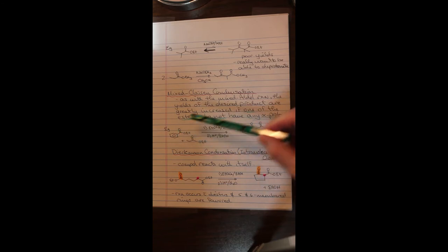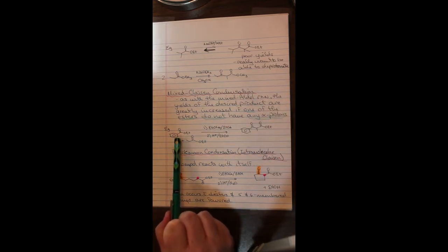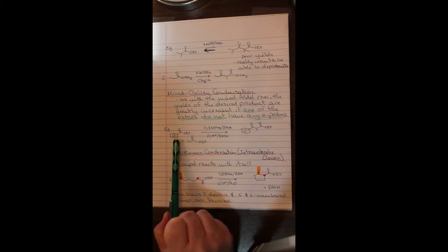So in a mixed aldol reaction, the yields of the desired product are greatly increased if one of the esters does not have any alpha protons. And this same was stated for the mixed aldol. So here in this case, you can see that we've generated this ethyl benzoate ester. This is going to be one of our species. Of course, there are no alpha protons here. And as a result, this is going to be the one where the enolate is always going to attack. We're going to treat it with sodium methoxide and ethanol. And probably for this reaction, the ethyl propanoate here is going to be added slowly to the reaction. So its concentration is never very high and it will not react with itself to create byproducts that you don't want.